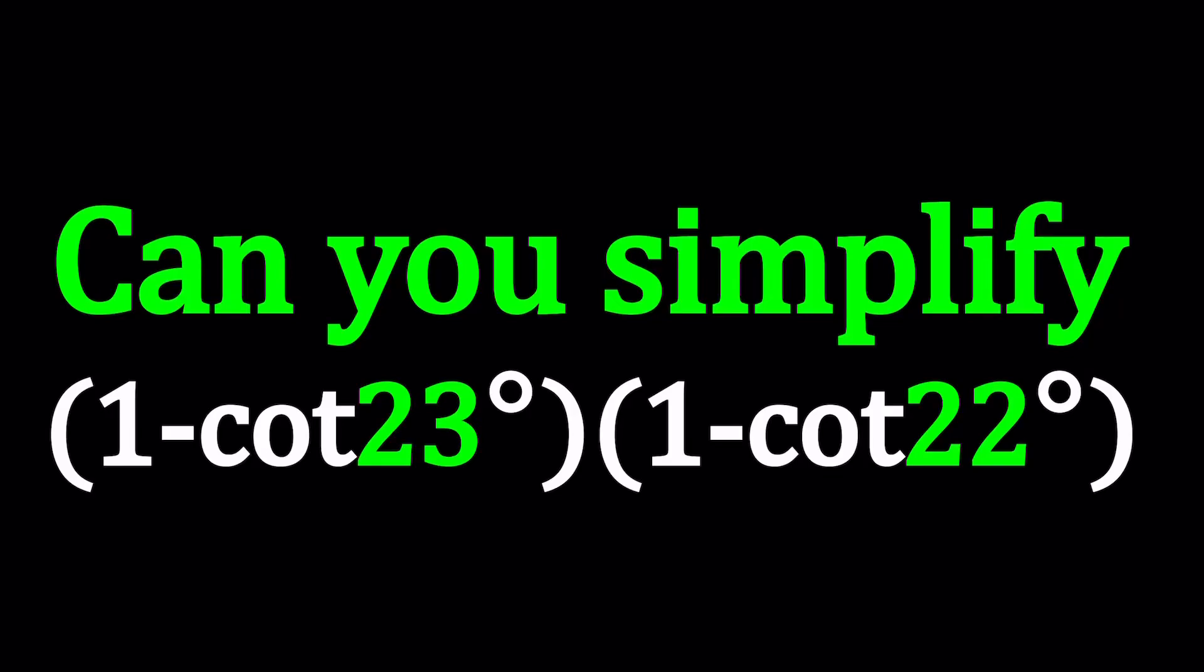Hello everyone, in this video we're going to be simplifying a trigonometric expression. We have 1 minus cotangent 23 degrees multiplied by 1 minus cotangent 22 degrees. So the angles are in degrees, but from now on I'm not going to write this degree symbol because I think it's understood.